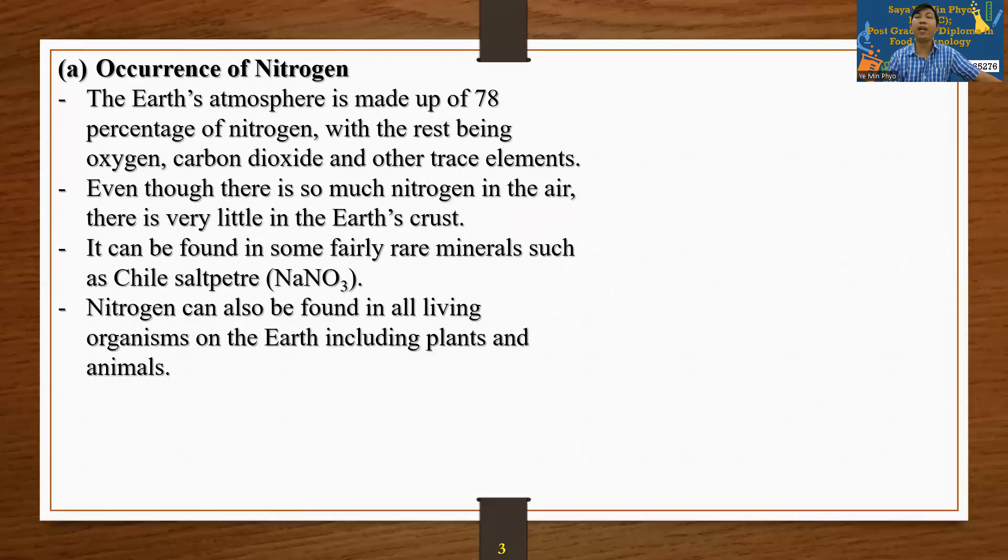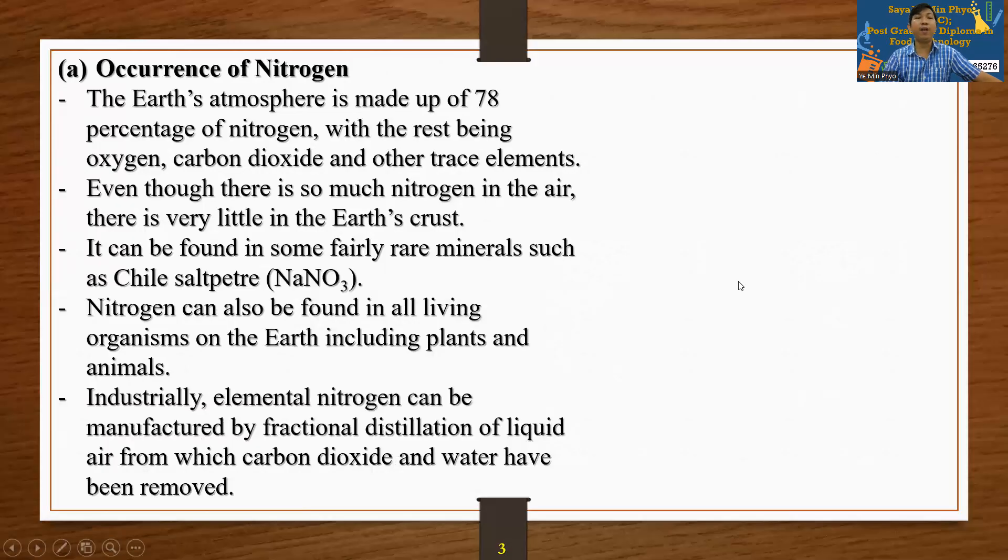Nitrogen can also be found in all living organisms on the Earth, including plants and animals. Industrially, elemental nitrogen can be manufactured by fractional distillation of liquid air from which carbon dioxide and water have been removed.